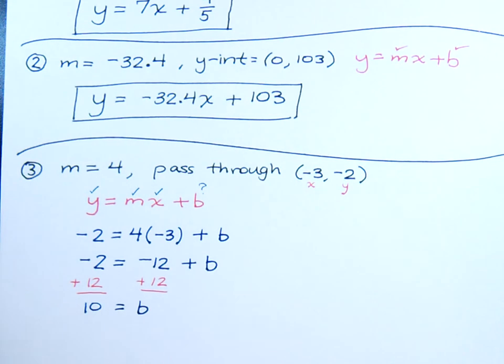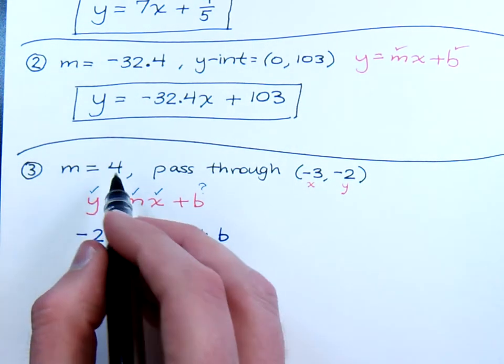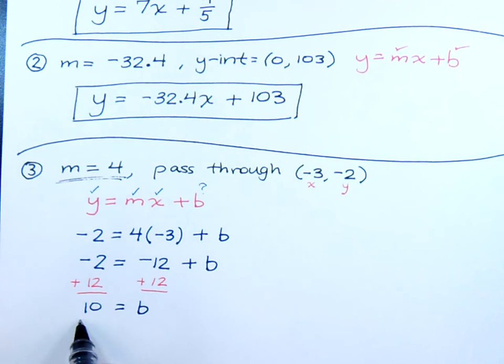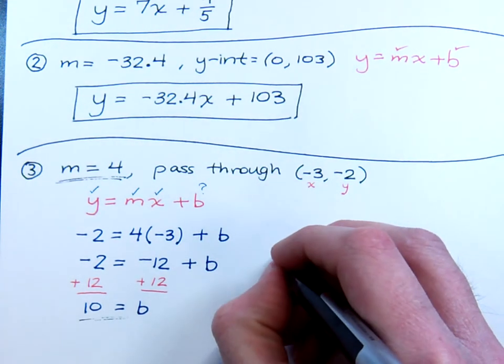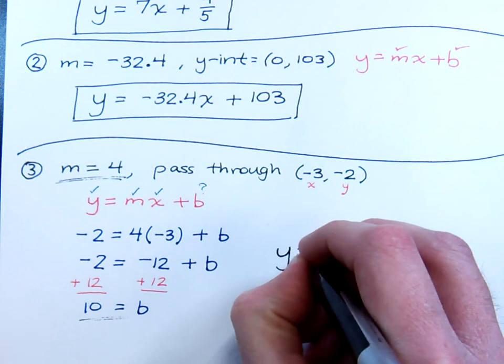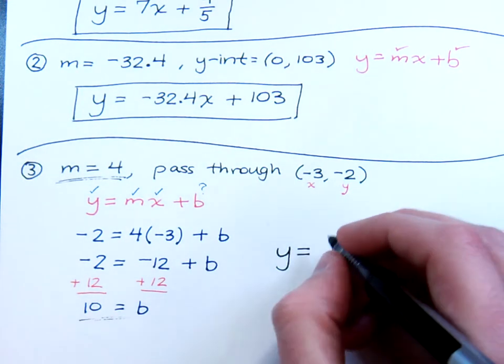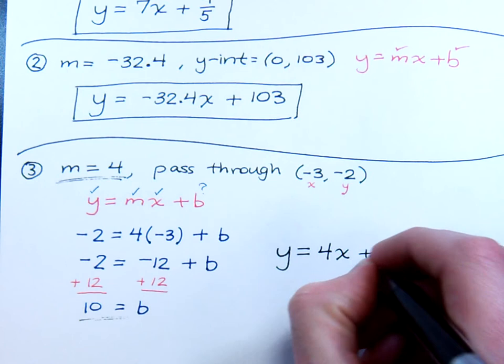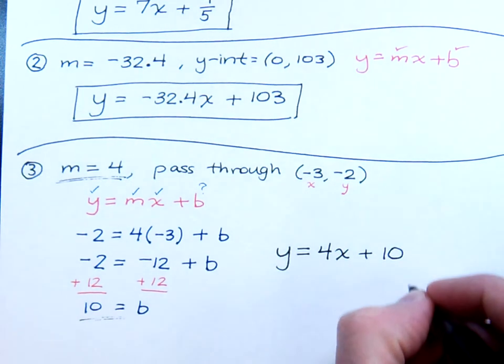So we put all of this information together. Here's my slope. Here's the y coordinate for my y-intercept. So your equation is y is equal to 4x plus 10.